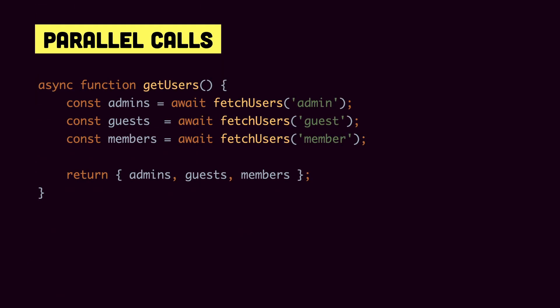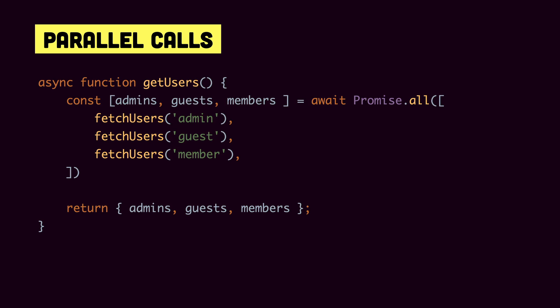Next, a note on parallel calls. Say we have getUsers with an await to fetch users by admin role, then fetch users by guest role, then fetch users with the member role. If each call takes two seconds, the function takes six seconds total because it waits sequentially. Since these requests don't rely on each other, we can run them in parallel using Promise.all — now all requests run in parallel and the function takes two seconds instead of six.